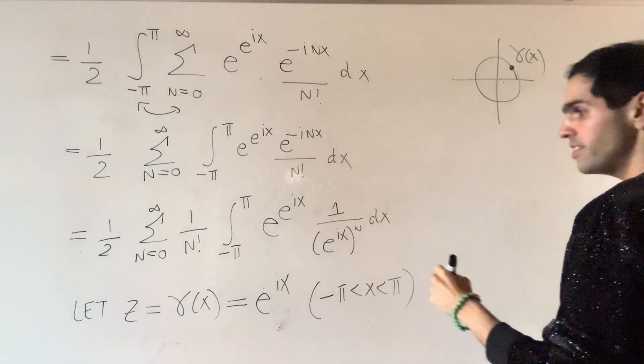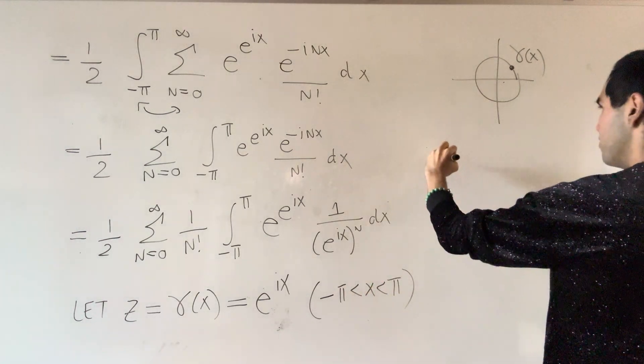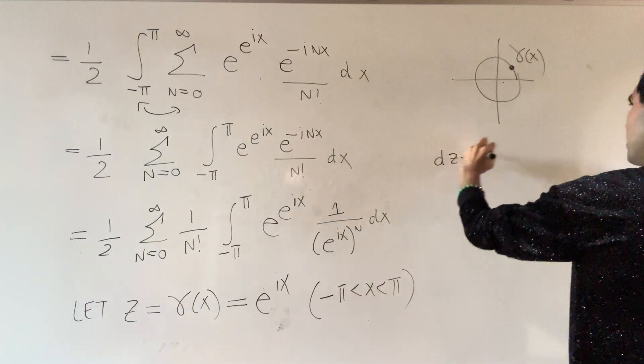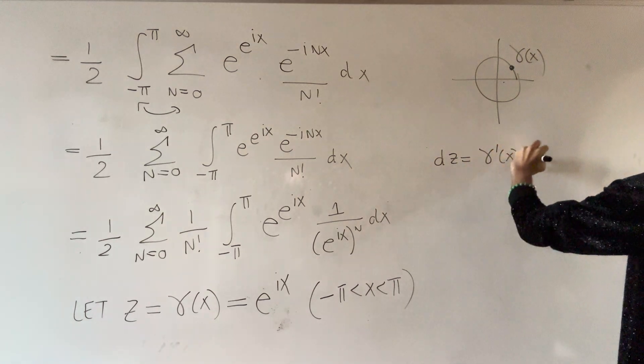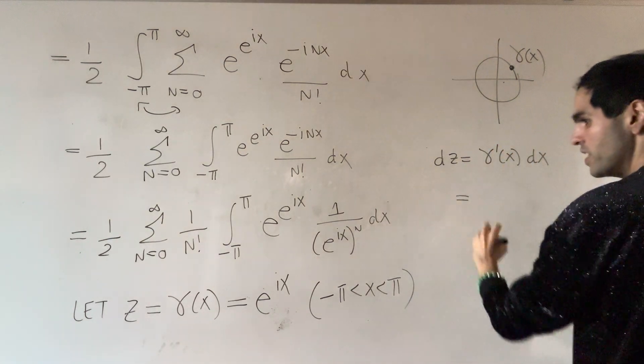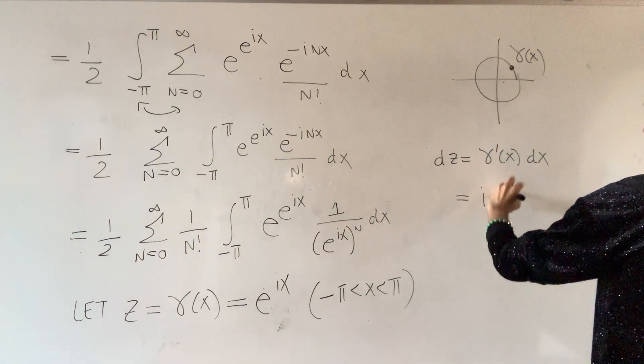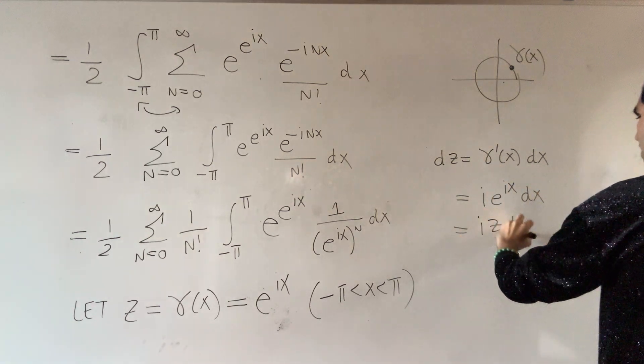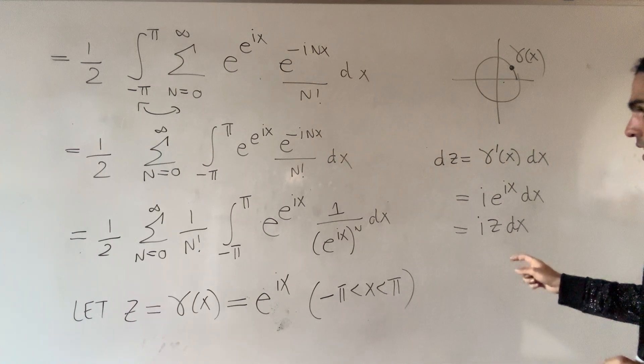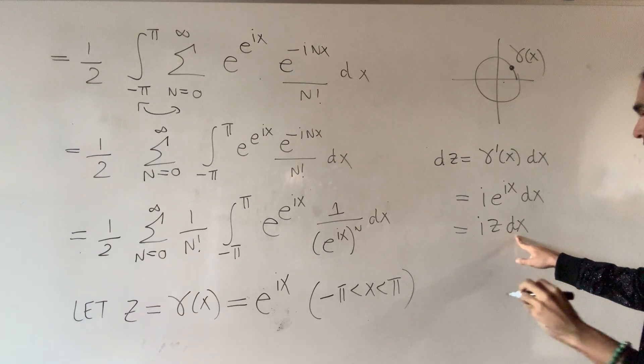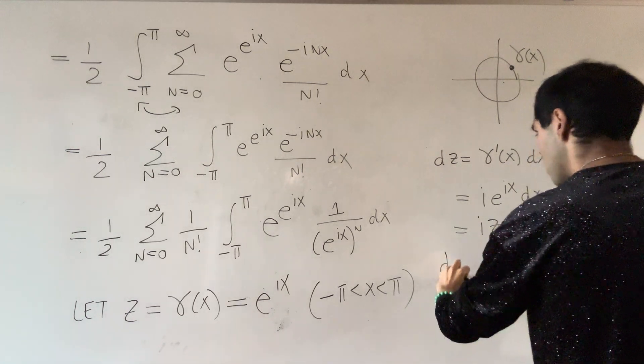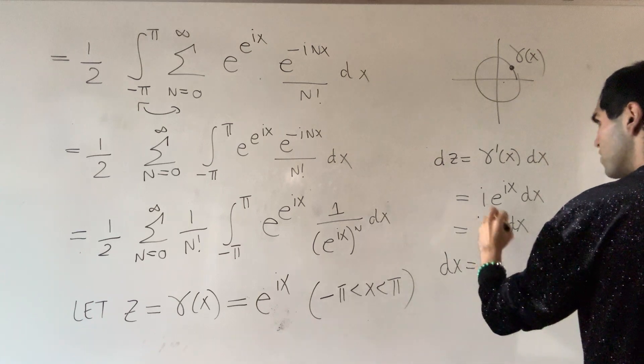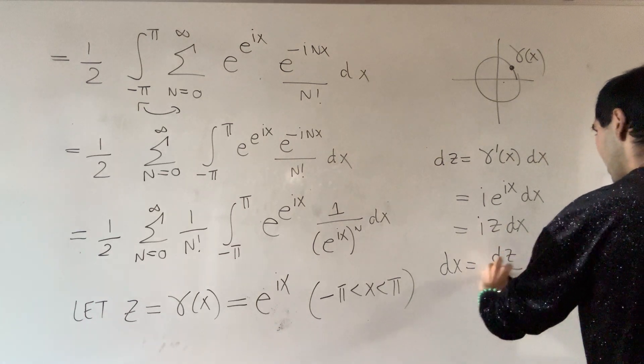Then dz, or gamma prime, is gamma prime of x dx, which is i e to the i x dx, which becomes i z dx. And in particular, dx becomes dz over i z.